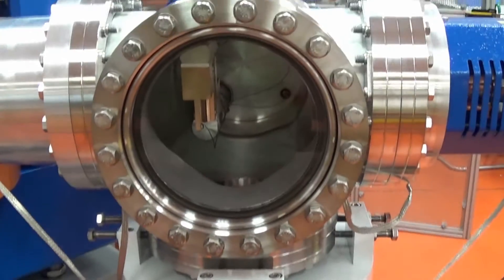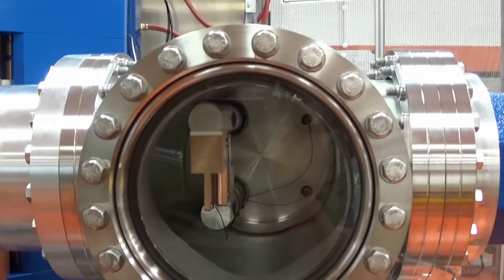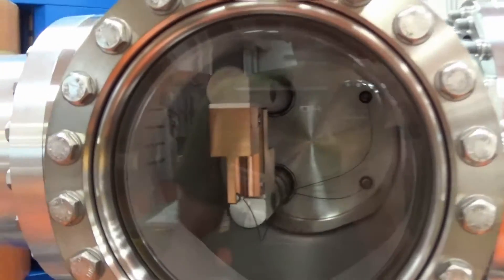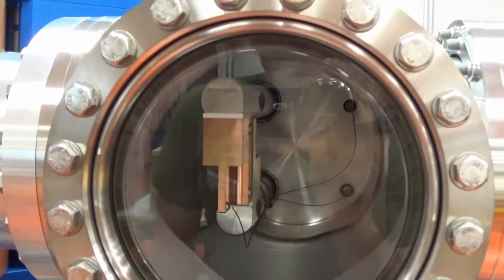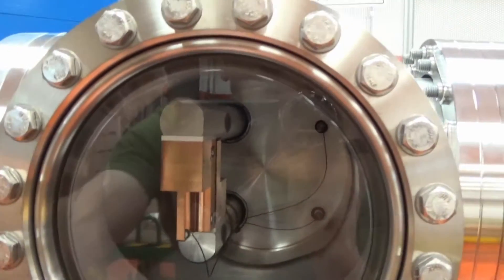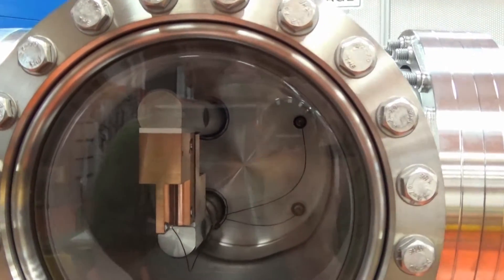Now something interesting here, we have a viewport. You can actually see inside the beam pipe and then that copper thing on the inside is the slits and the beam comes across this way and it hits the slits.